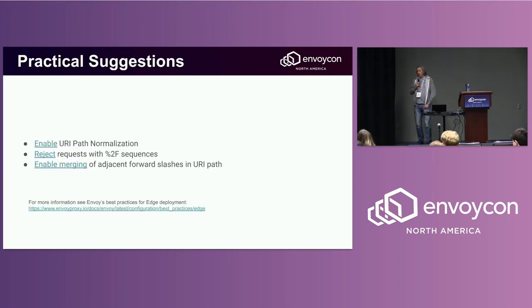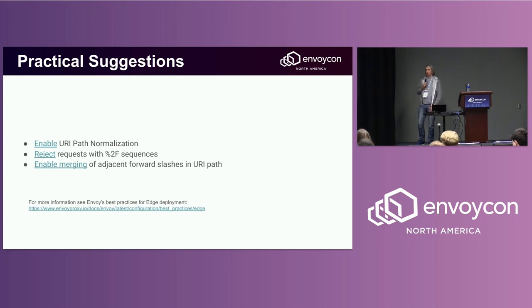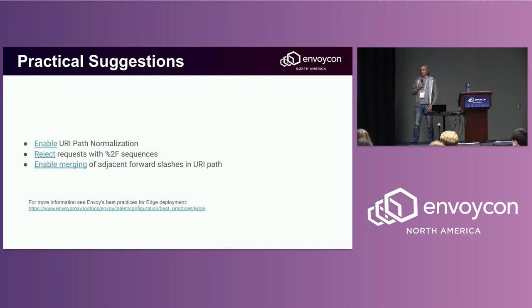For practical suggestions, the best one is to know your origin server — what path normalization it performs, what transformations it makes.